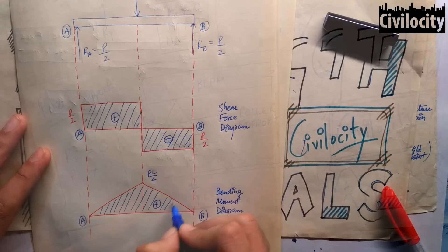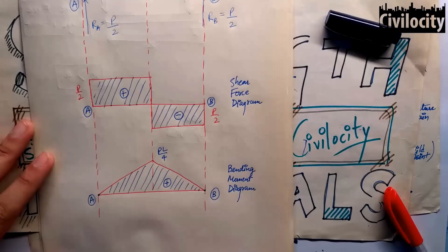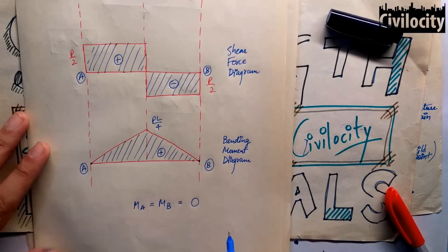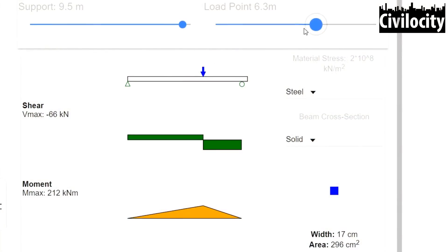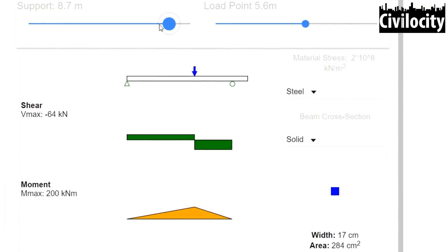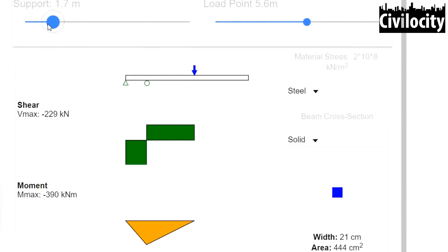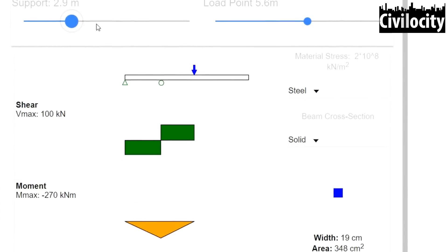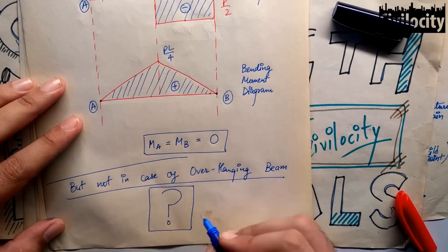To agar hume simply supported beam ki baat karne, uska bending moment diagram banega jo maximum center pe hota hai, lekin ends pe zero hota hai. Aur wo aisa kyun hota hai, uske baare mein hum aane wale lectures mein baat karenge.